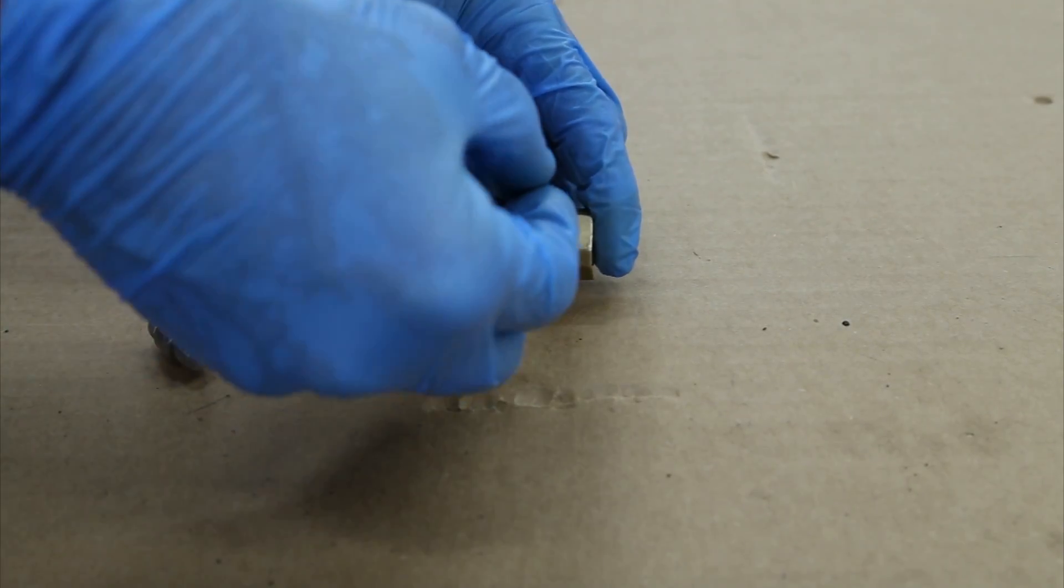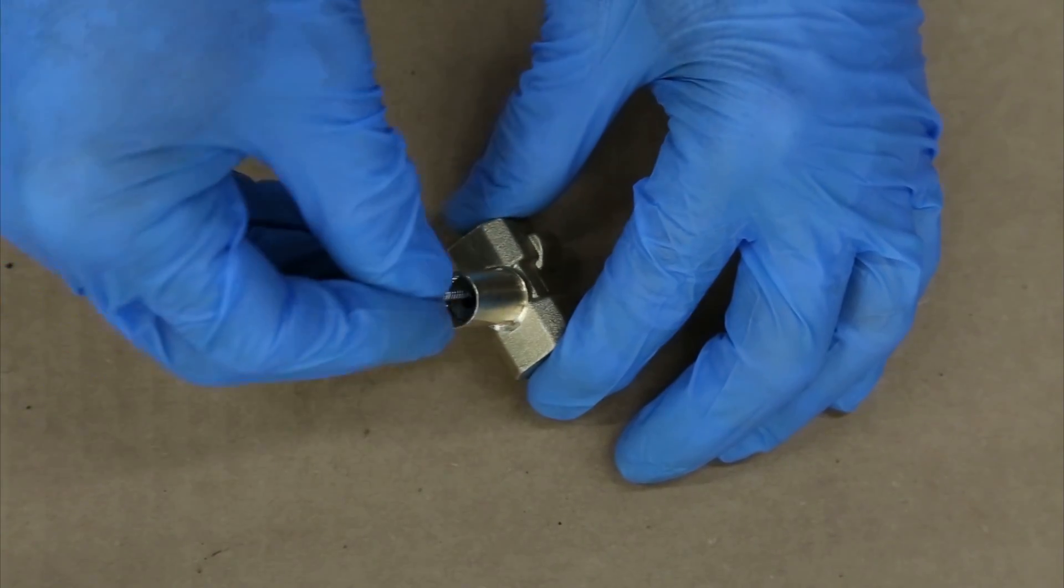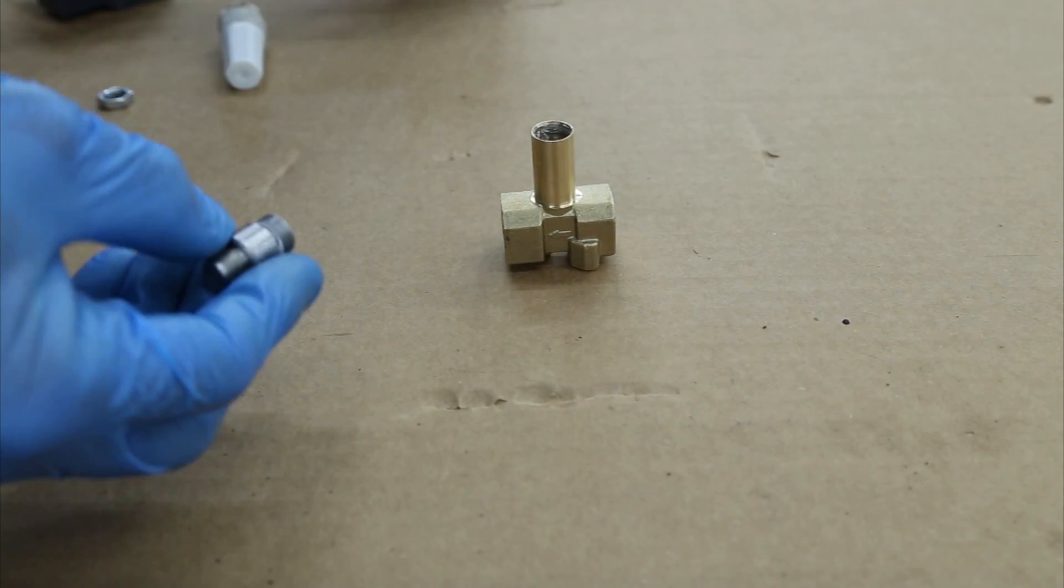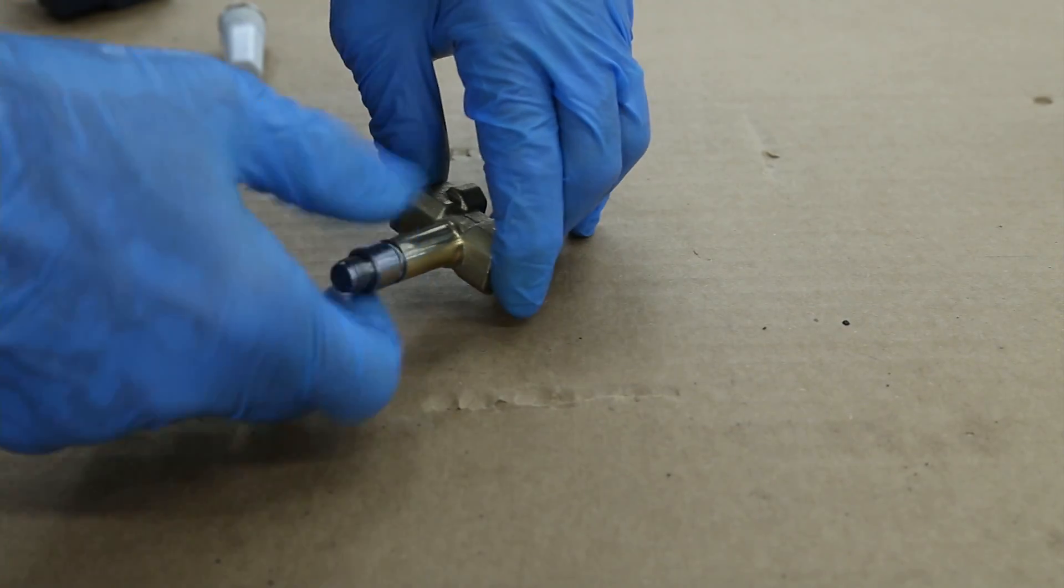Put the plunger taper in down into the body. Put the spring into the plunger. Put a drop of blue thread lock onto the threads of the plug nut and install it onto the end of the body.